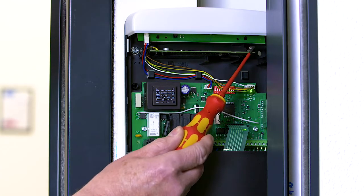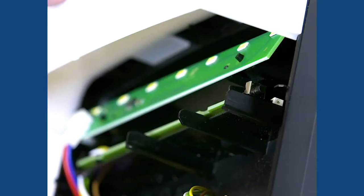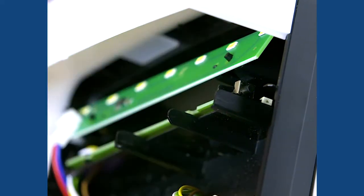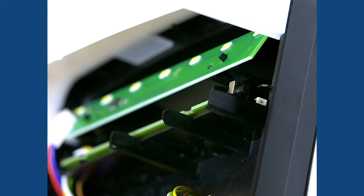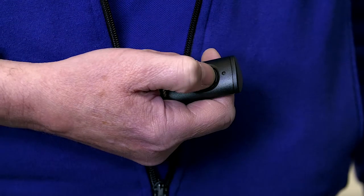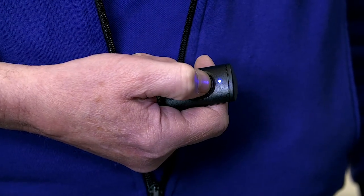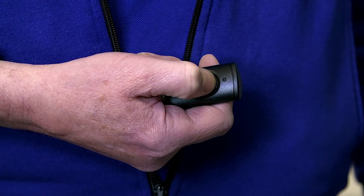Inside the control box you'll see a programming button and an LED light. Press and release the programming button. The LED on the receiver will start to flash slowly. Press and hold the button on your hand transmitter until the LED flashes blue red blue red.